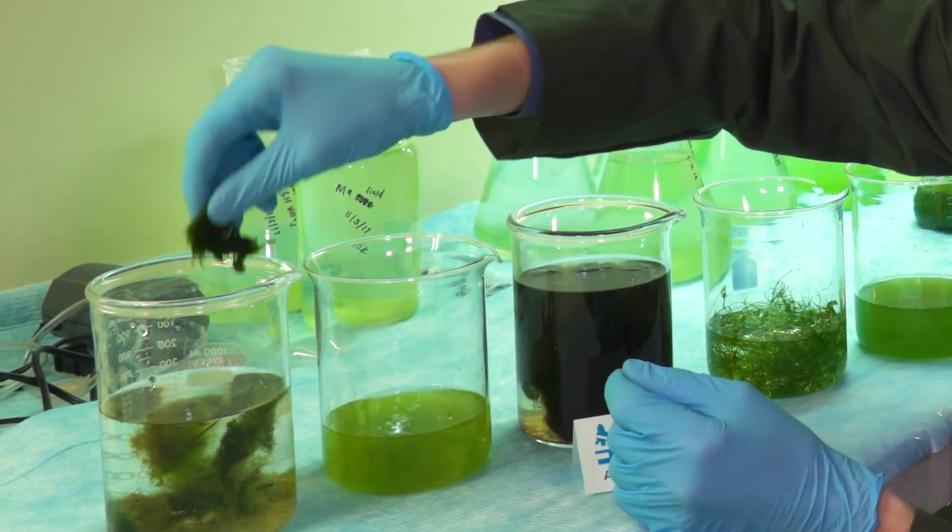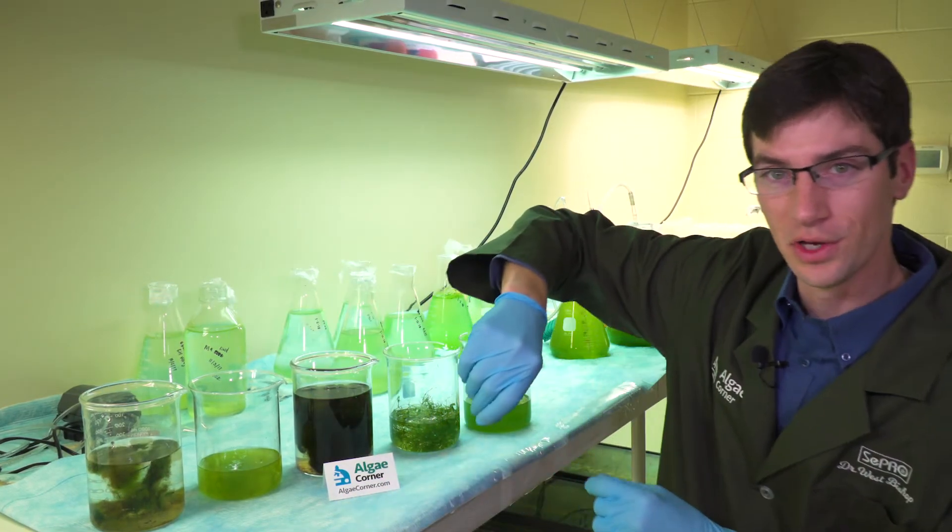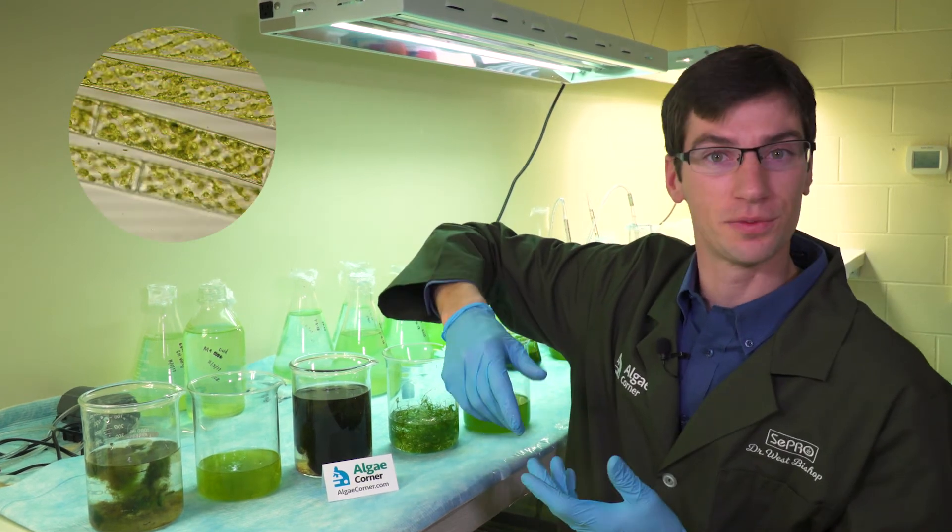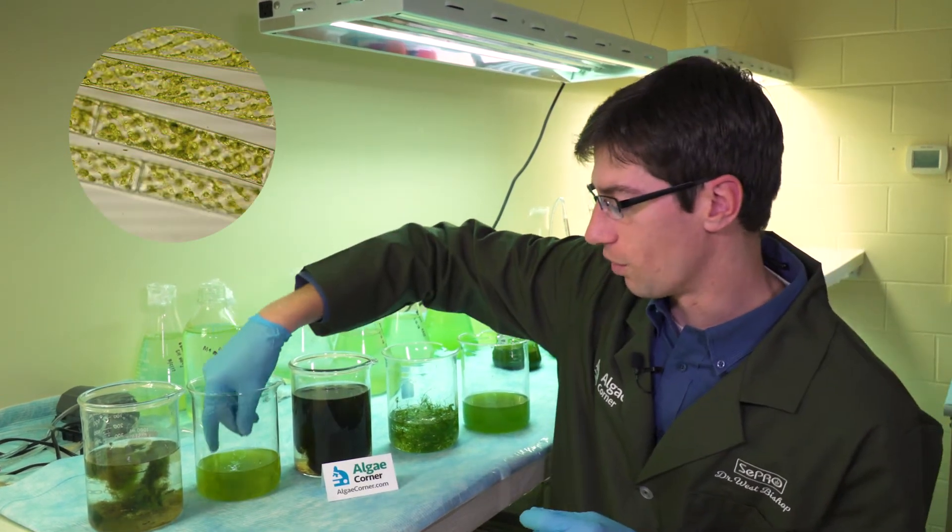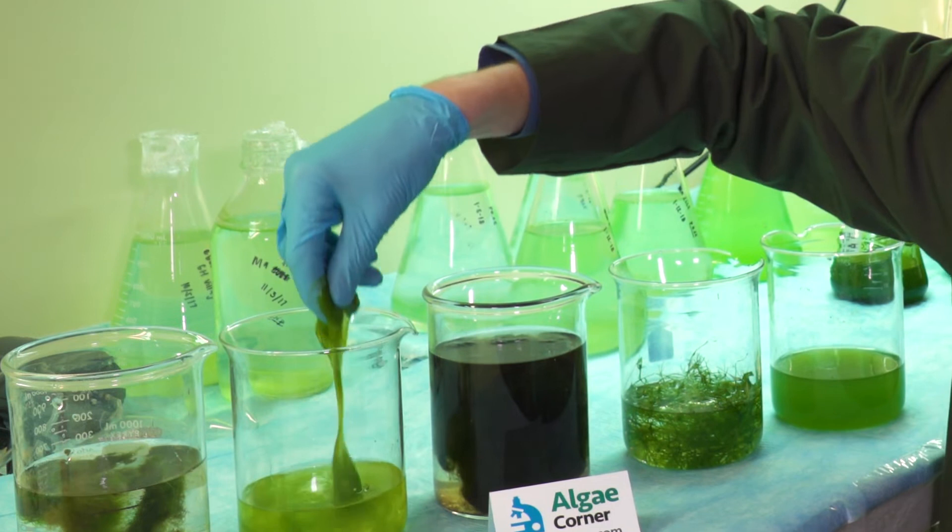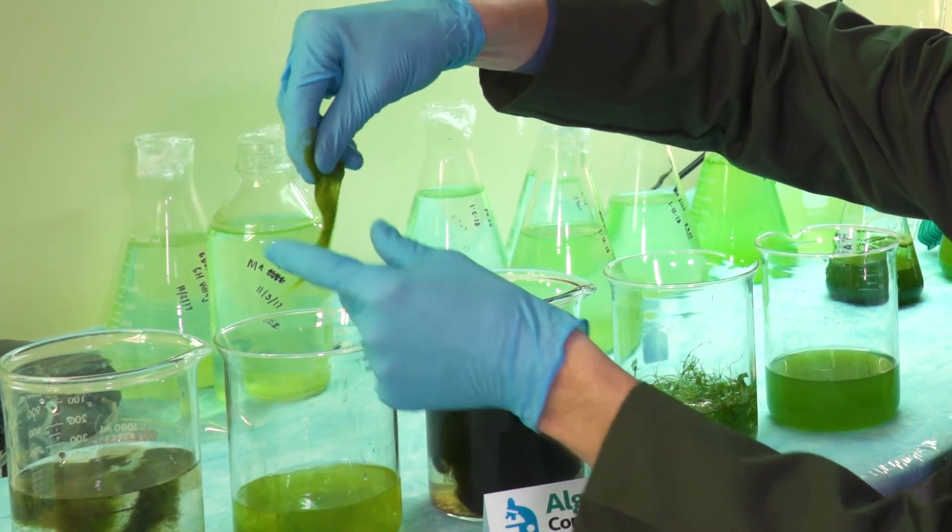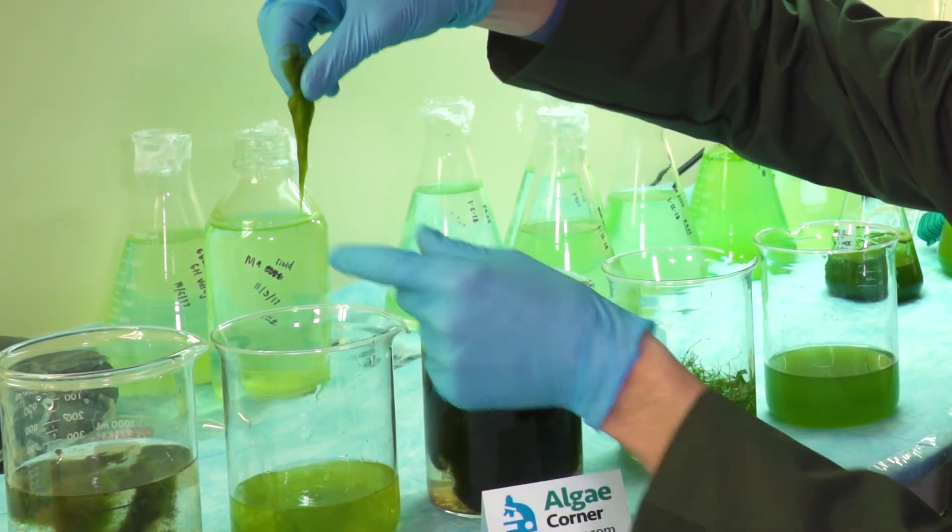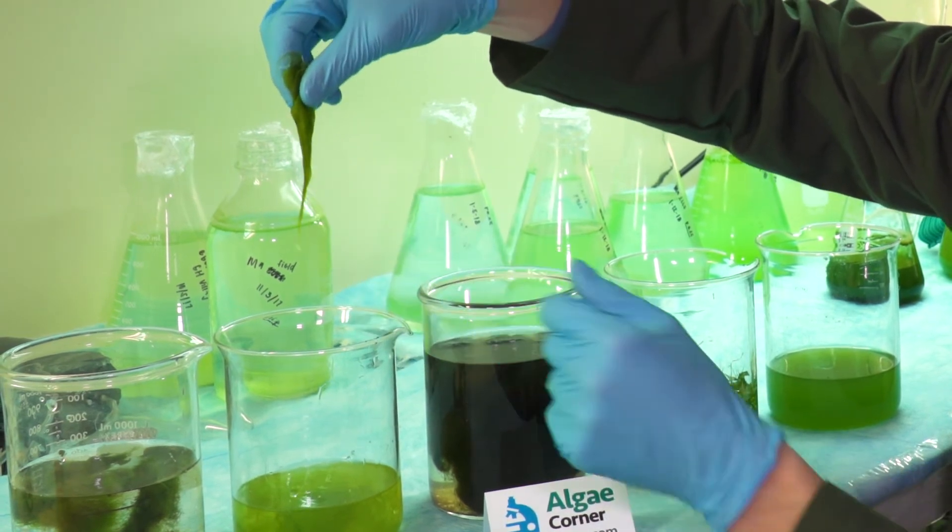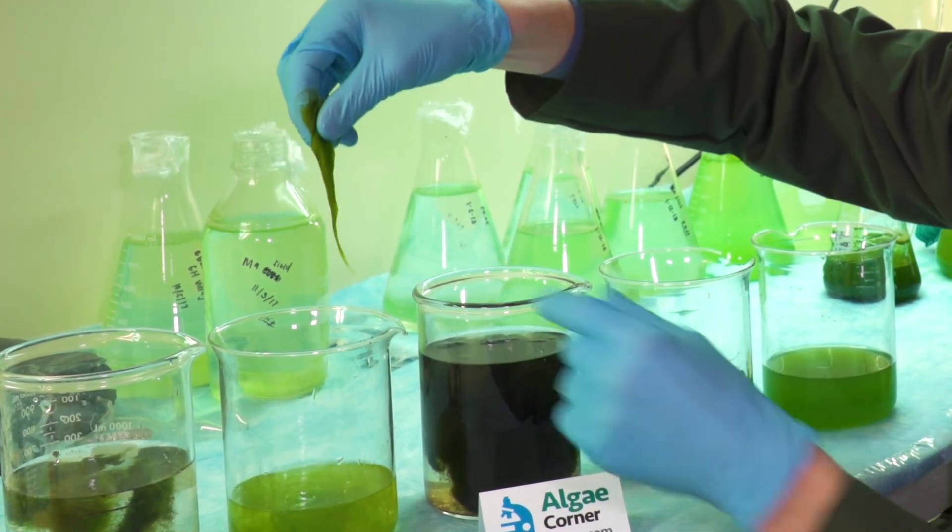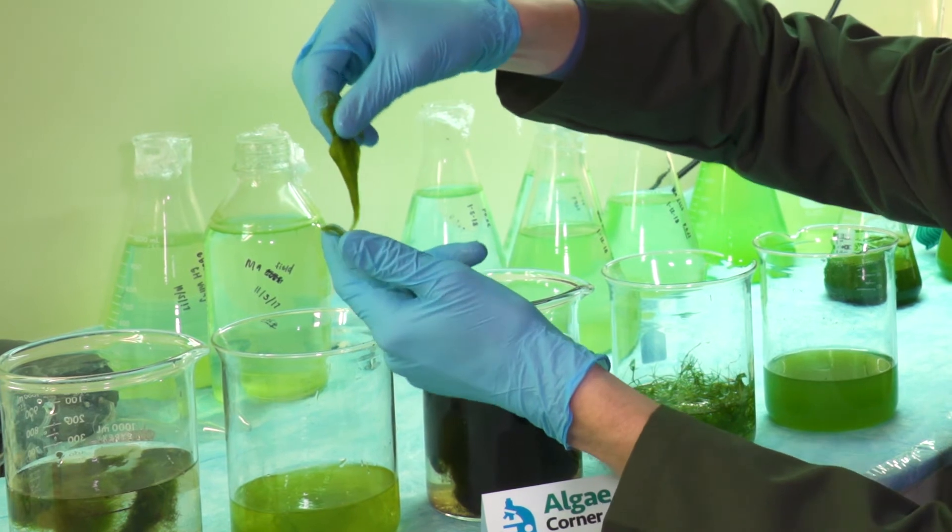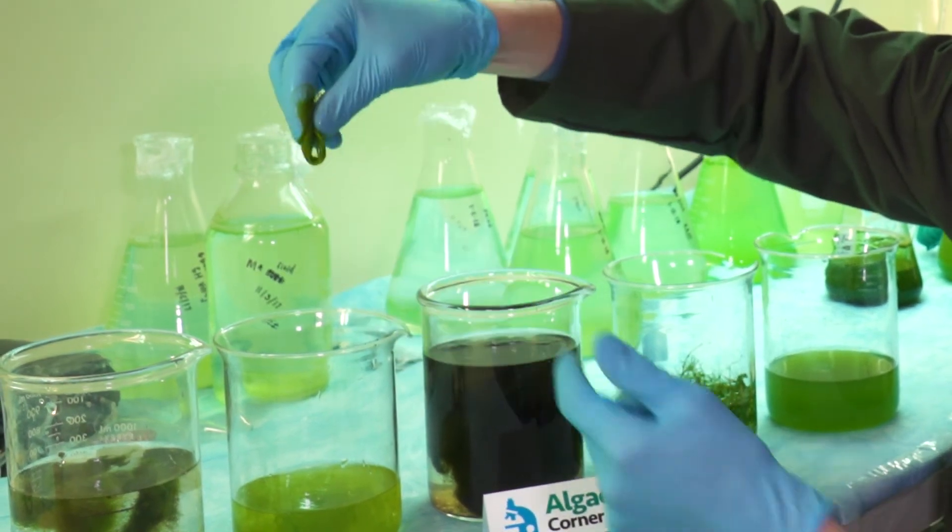Another common type you may see in the field is Spirogyra. Spirogyra is more of a bright green filamentous algae, more slick feeling. You can squeeze it out, but it's still sort of slimy and slick. It's often called silk algae because it is a little more slick, not that cotton feeling like Pithophora.